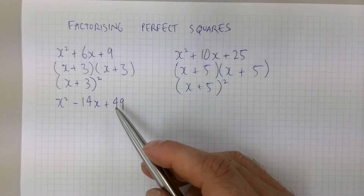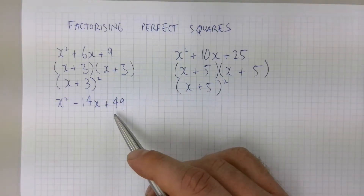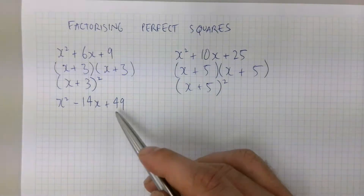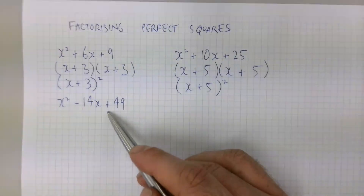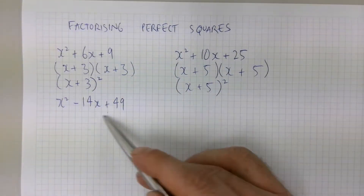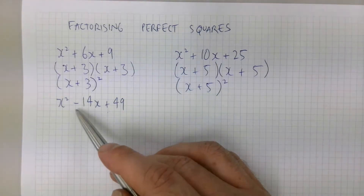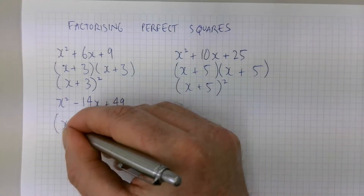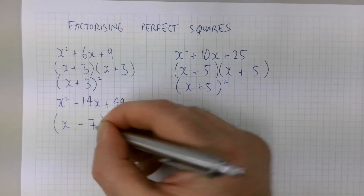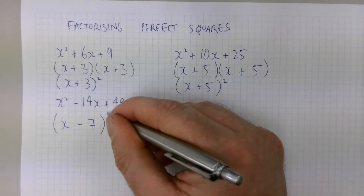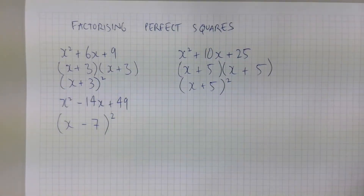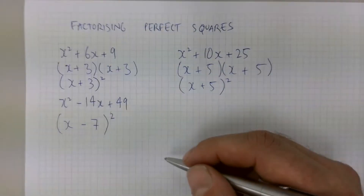For the last example, you might see the pattern straight away. There's a positive and a negative, so I know both numbers need to be negative — they multiply to give a positive but add to give a negative. So the numbers are −7 and −7, and the answer simplifies directly to (x − 7)².